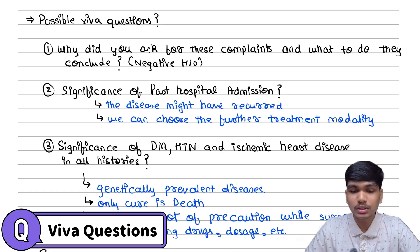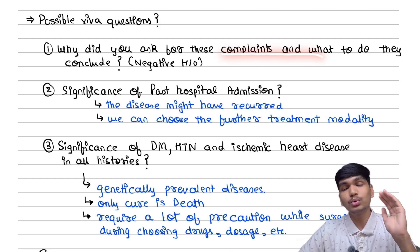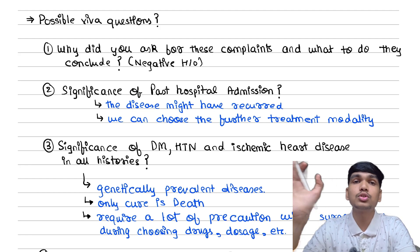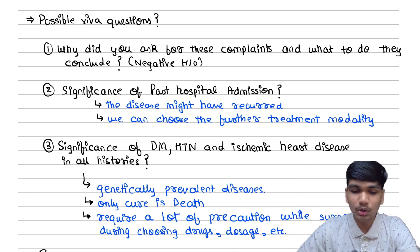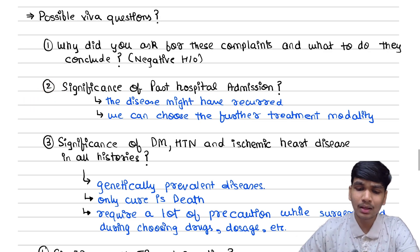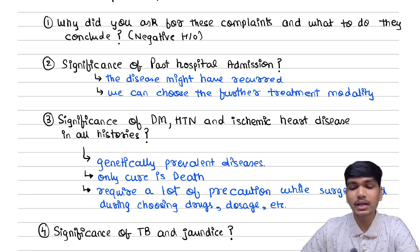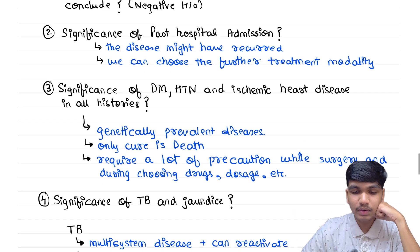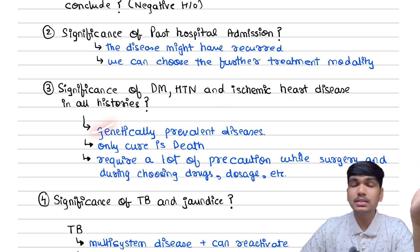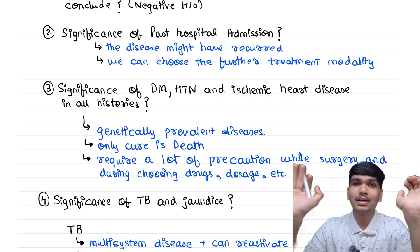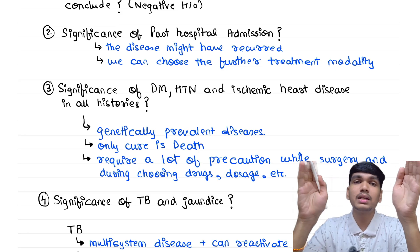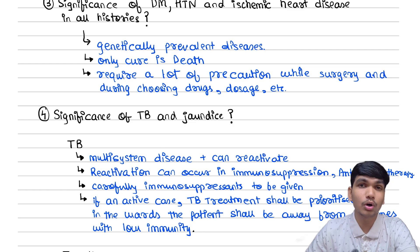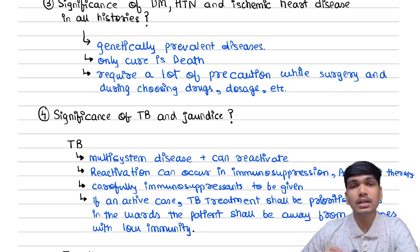At the end, what are the possible viva questions? First, why did you ask for these complaints and what do they conclude? This relates to the negative history — you are ruling out complaints to reach a single spectrum of the disease. Next, what is the significance of past hospital admission? The disease might have reoccurred and we can choose the treatment modality — if the same disease is recurring, we need to manage it aggressively. Next, the significance of diabetes, hypertension, and ischemic heart disease: these are genetically prevalent diseases that we can only treat but not cure, requiring lots of precaution during surgery or drug selection.